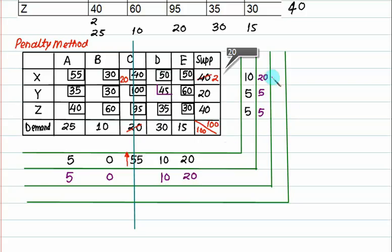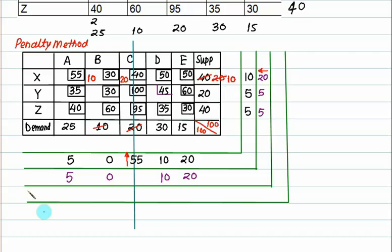Now the maximum penalty is 20. In this row, the minimum cost is 30, and in the other row with penalty 20, the minimum cost is also 30. So there is a tie, which we break arbitrarily. We go with this allocation of 20, and our remaining requirement is 10, so we can fulfill 10. We have a remainder of 10, and this column is struck out.